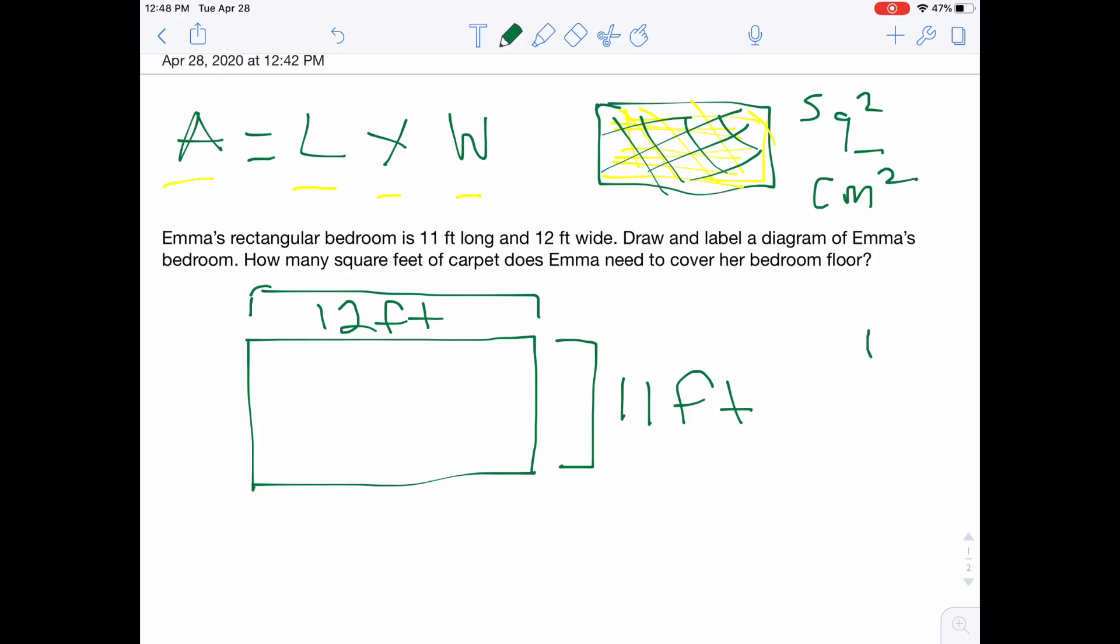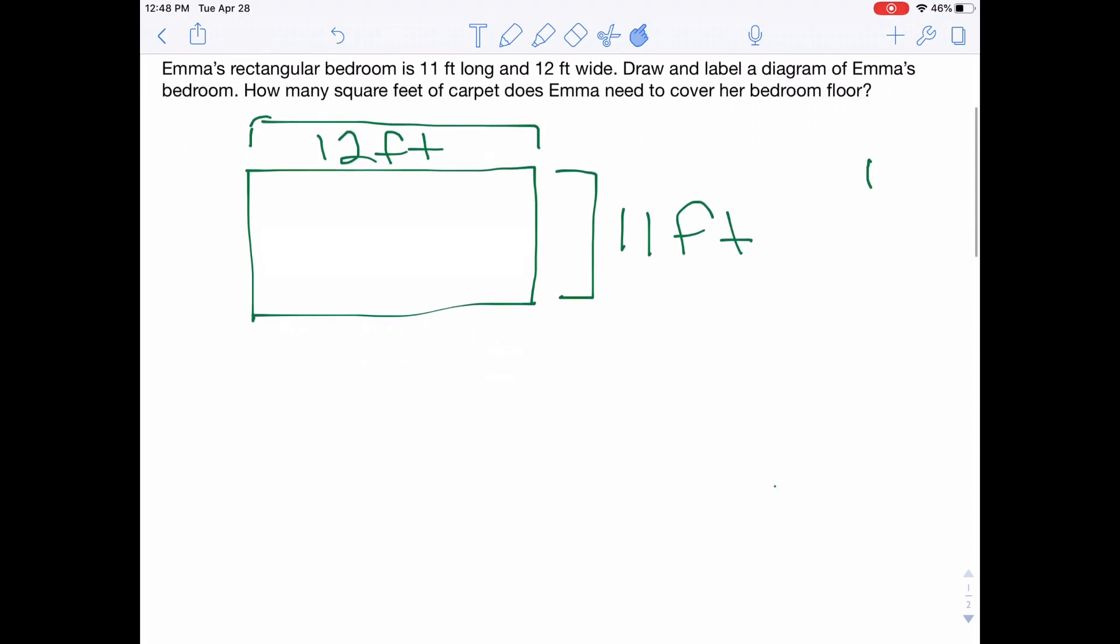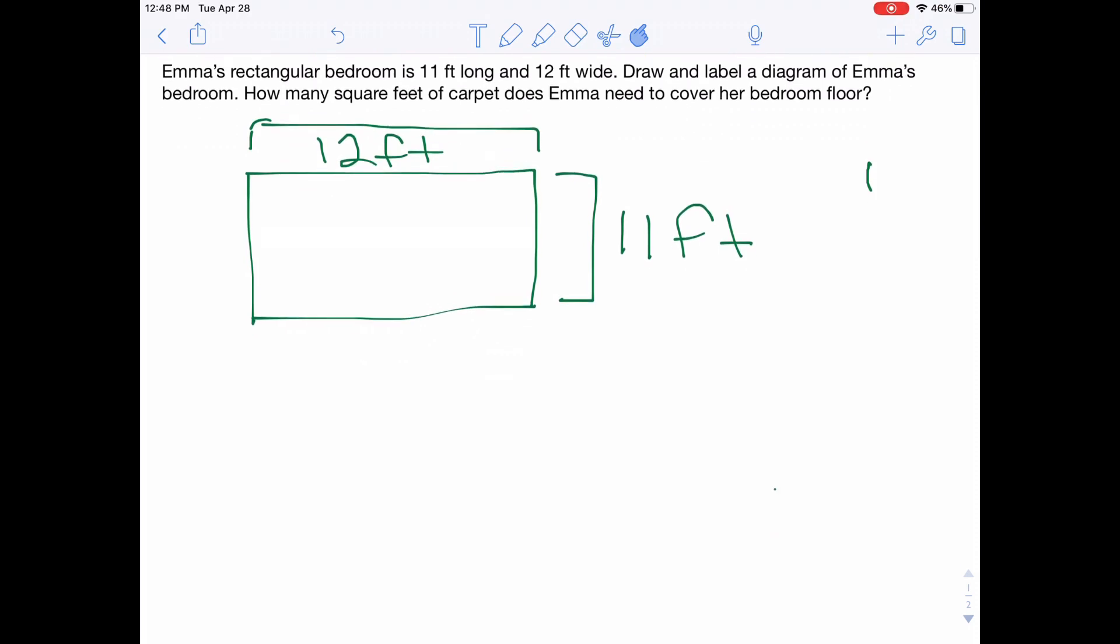Our first problem: Emma's rectangular bedroom is 11 feet long and 12 feet wide. I actually switched these. I need to switch them back. So 11 feet long and 12 feet wide. Draw and label a diagram of Emma's bedroom. So this is Emma's bedroom, Emma's room. And we need to figure out how many square feet of carpet does Emma need to cover her bedroom floor.